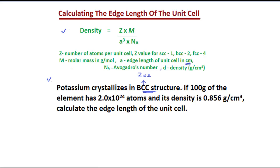The question further says that if 100 gram of the element is 2.0 multiplied by 10 to power 24 atoms, it means NA value is given, number of atoms are given. And its density, here we have D value. Density is 0.856 gram per centimeter cube. Now the question says, calculate the edge length of the unit cell means we have to find out A value.